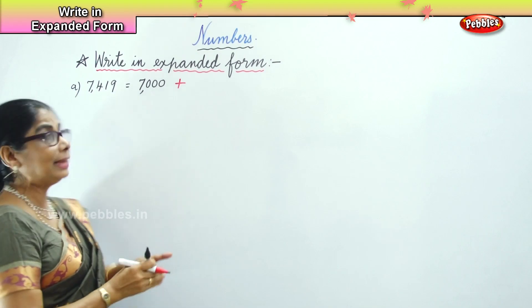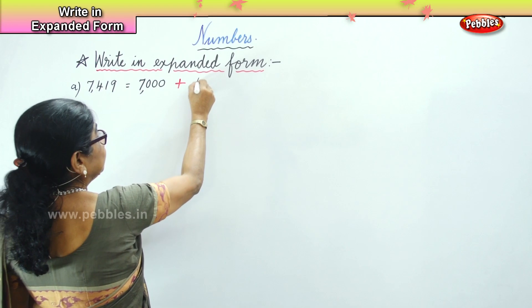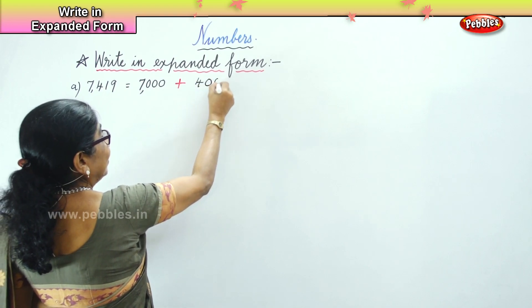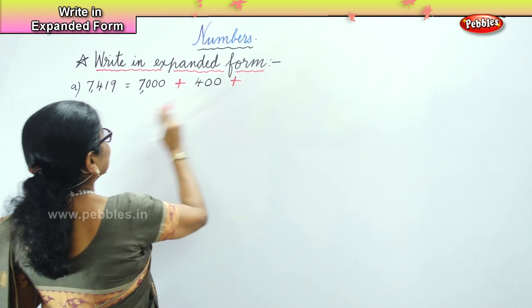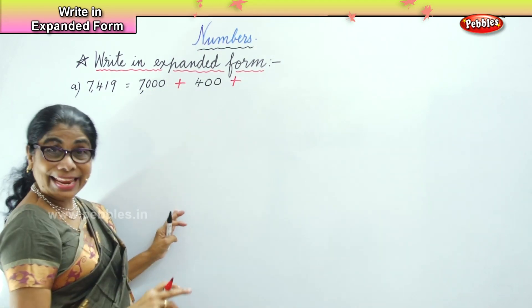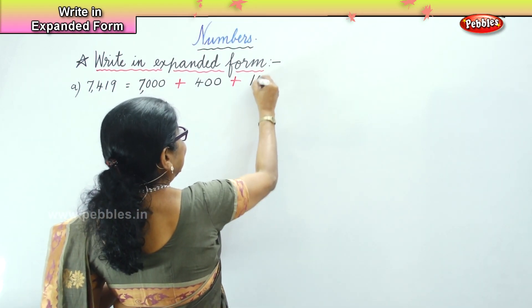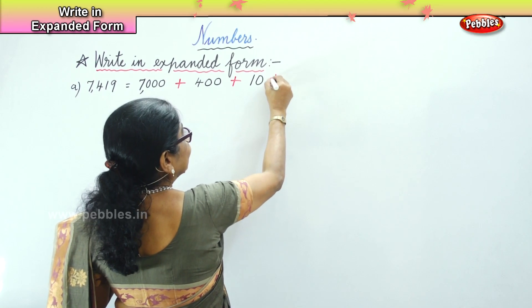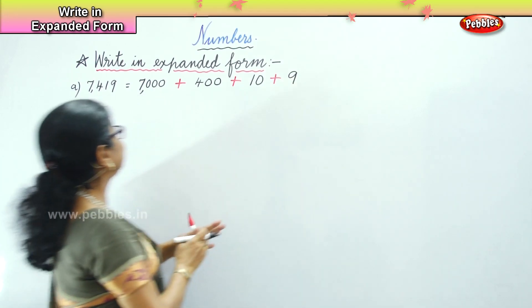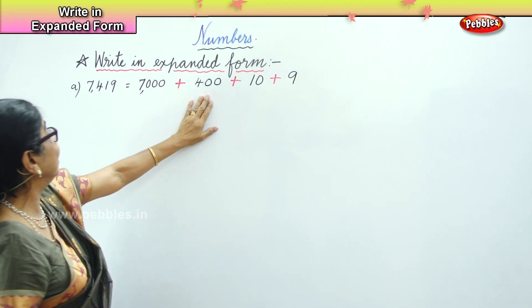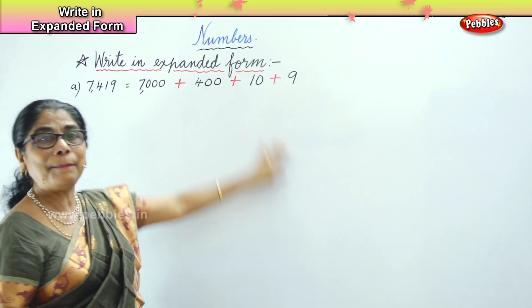7,000 plus. Next, 400. Then 100 times 4 gives us 400. Next component: 10.